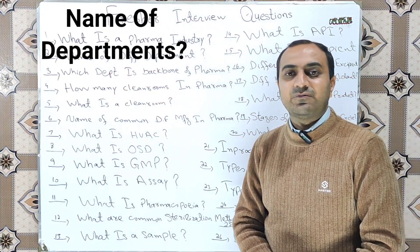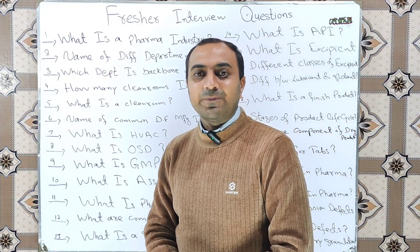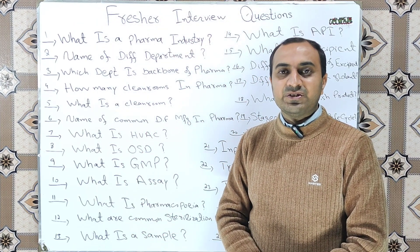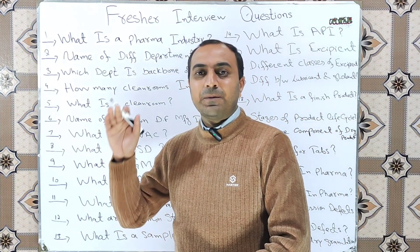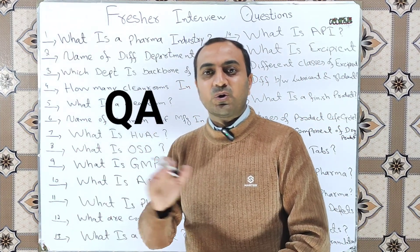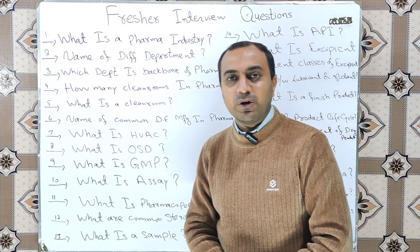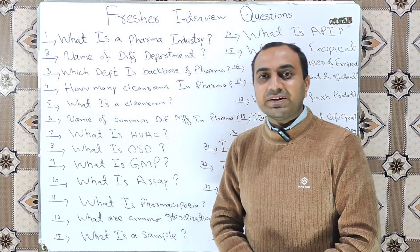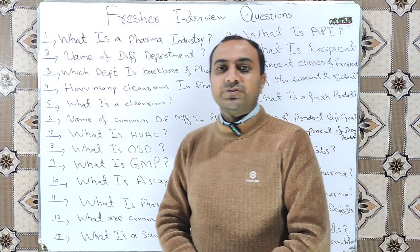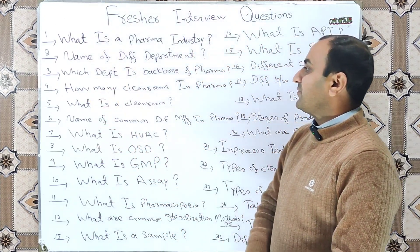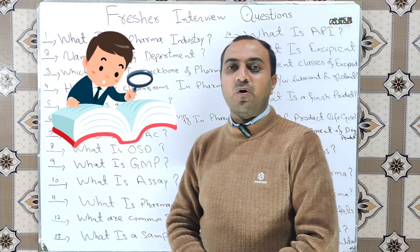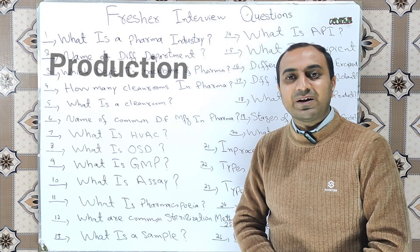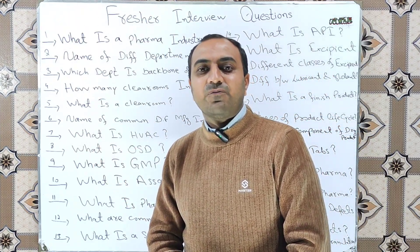Name the different departments in the pharmaceutical industry. There are many departments which work in coordination with each other. The most important are: the Production department, Quality Assurance (QA) department, Quality Control (QC) department, Research and Development department, Regulatory department, Marketing department, HR department, and Security department. The next question is: which department is the backbone of the pharmaceutical industry? Every department has its own importance, but the Production department is considered the backbone.